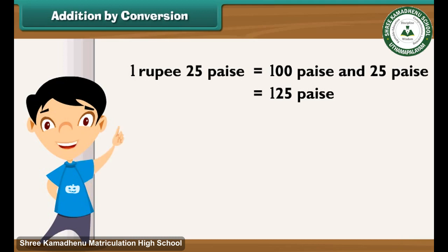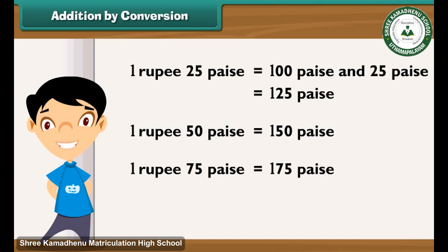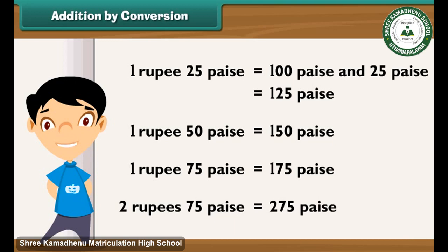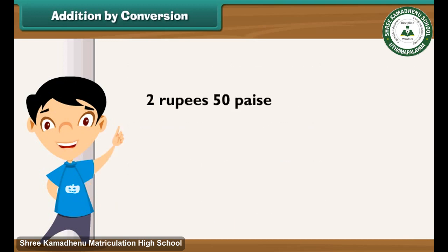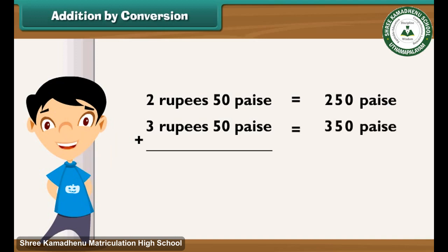By the same logic, 1 rupee 50 paise is equal to 150 paise, 1 rupee 75 paise may also be represented as 175 paise, and 2 rupees 75 paise is equal to 275 paise. Let us add 2 rupees 50 paise and 3 rupees 50 paise. 2 rupees 50 paise is equal to 250 paise. 3 rupees 50 paise is equal to 350 paise.